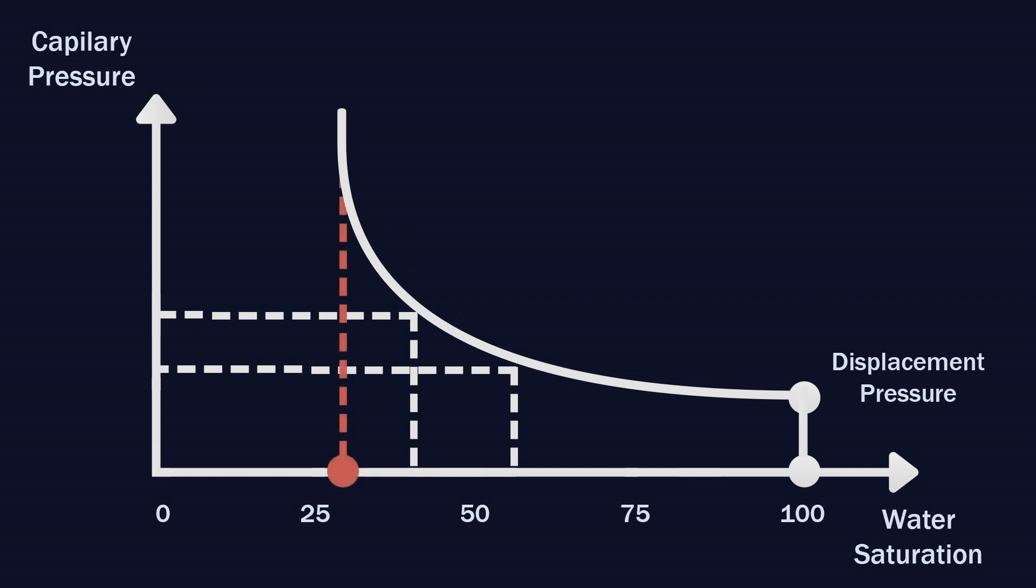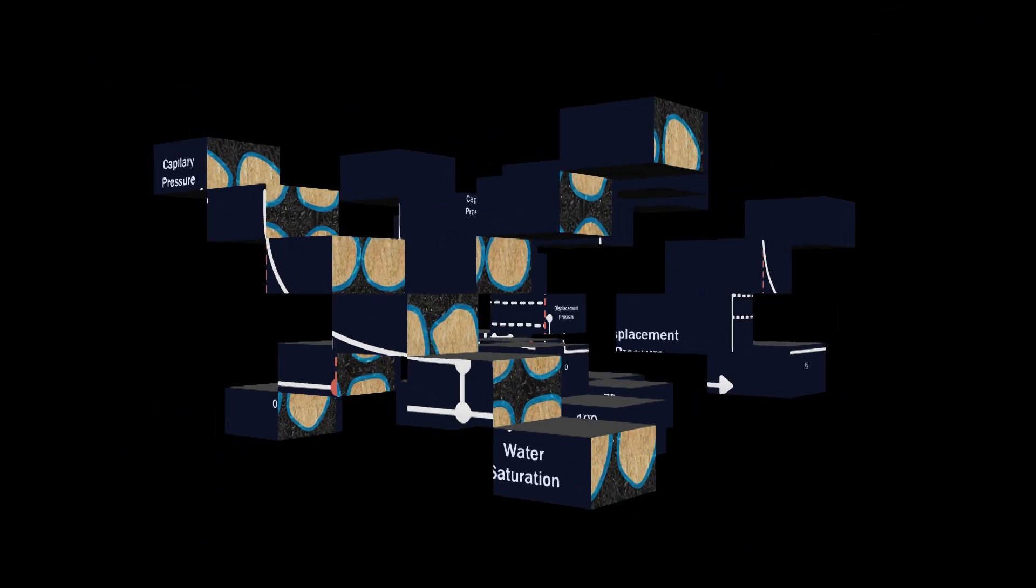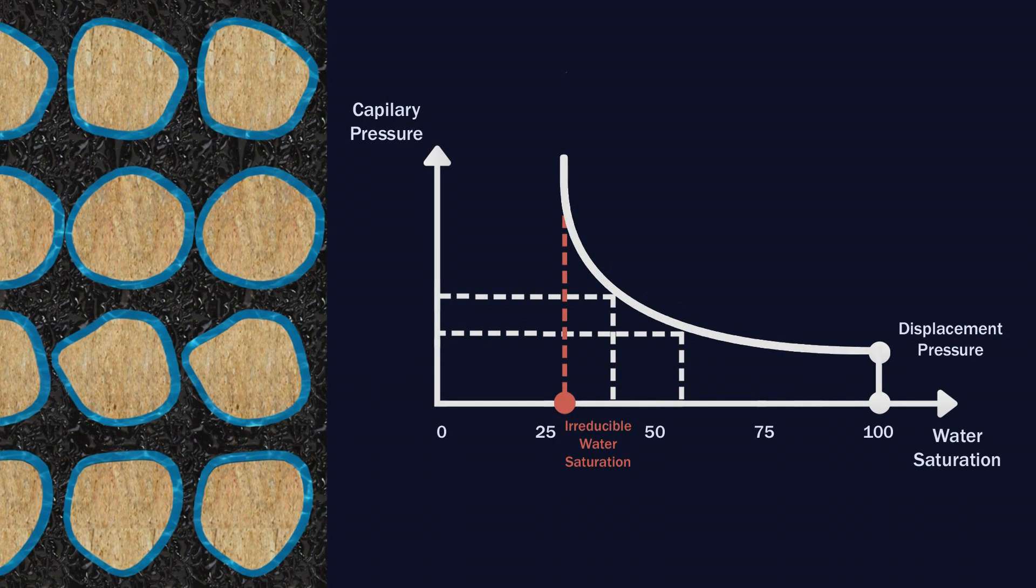At this point, no more water can be expelled and water saturation is called irreducible or connate water saturation. Rock grains can't possess higher oil saturation than that reached no matter how capillary pressure value is increasing.